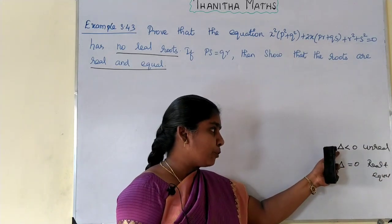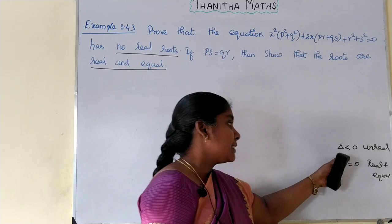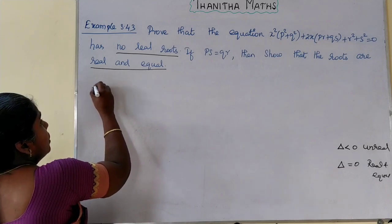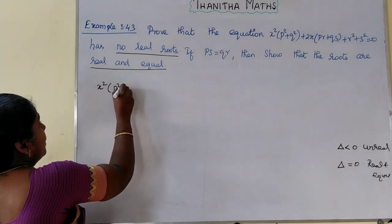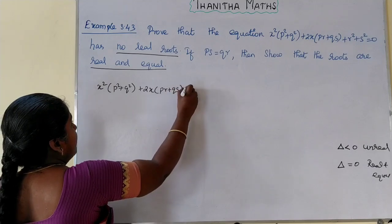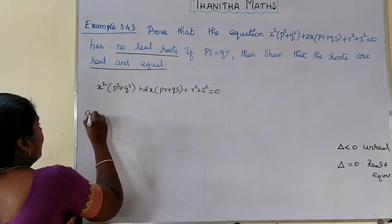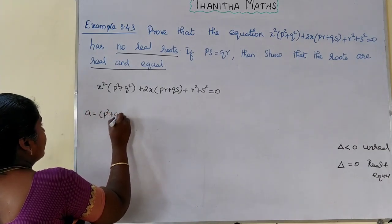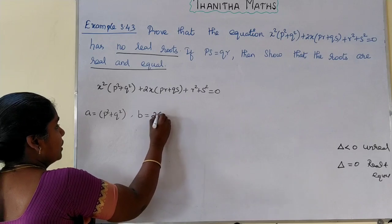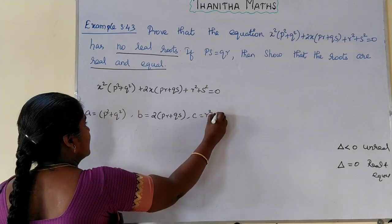So we have to prove these two conditions. For the equation x²(p²+q²) + 2x(pr+qs) + (r²+s²) = 0, we identify: a = p²+q², and b is the coefficient of x, so 2b = 2(pr+qs), meaning b = pr+qs. The constant term c = r²+s².